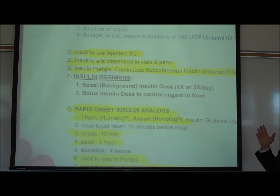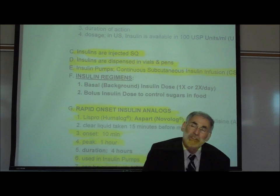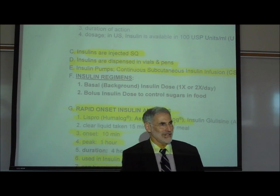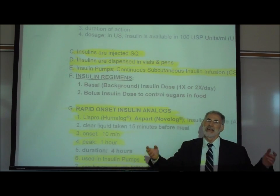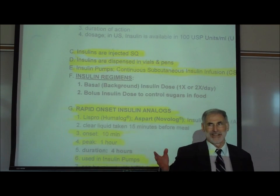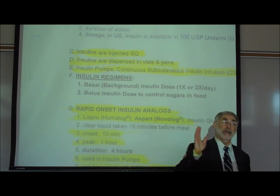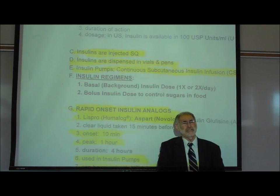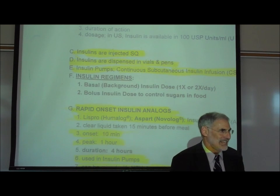The basic problem with giving insulin is this: when you give insulin, it lowers the blood sugar level — that's what it's supposed to do. But if you give too much insulin, it lowers the blood sugar level too much, and the patient can go into a coma from lack of enough sugar in the bloodstream. It's very difficult to calculate ahead how much insulin they need.